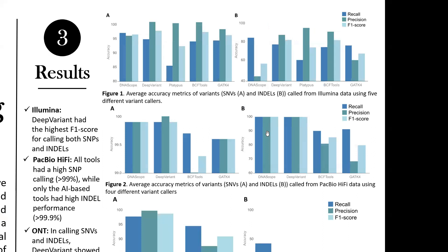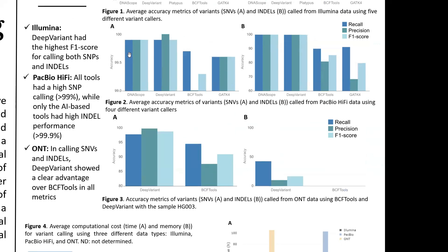In the results section, for Illumina data — these are averages across the three samples — we can see that for SNP calling, DeepVariant had the highest F1 score in both SNP calling and indels. I focus on F1 score because it takes into consideration both precision and recall. For PacBio HiFi data, all tools achieved more than 99% accuracy in precision, recall, and F1 score for SNPs, which is very impressive.